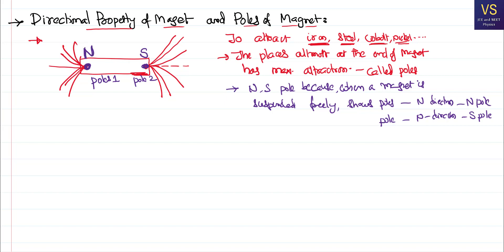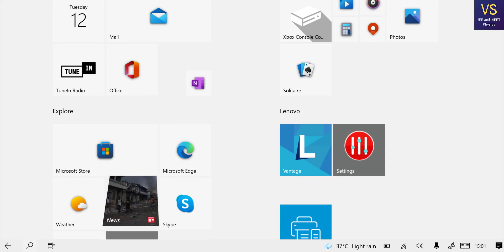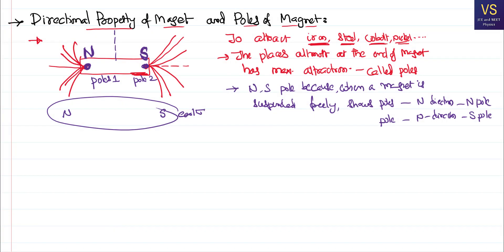On that basis, when this magnet is suspended freely on the earth, it aligns itself such that — if you call this the earth — this is the physical direction of the geographic north of the earth and this is the physical direction of the geographic south. The poles align themselves in such a way that it shows north and south geographically. That is why they are called north and south poles.